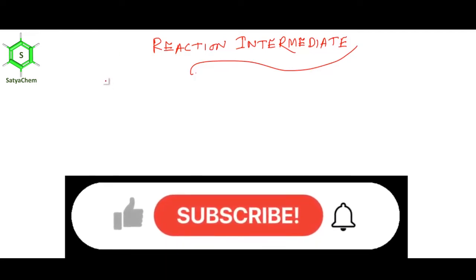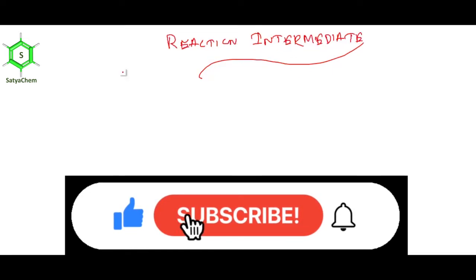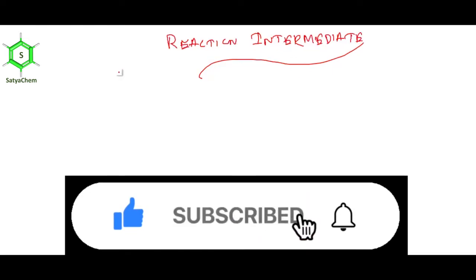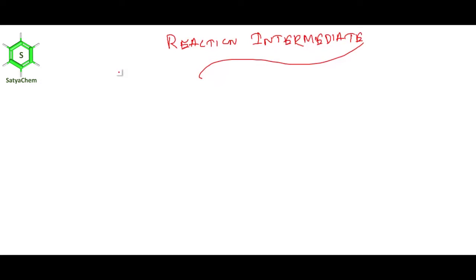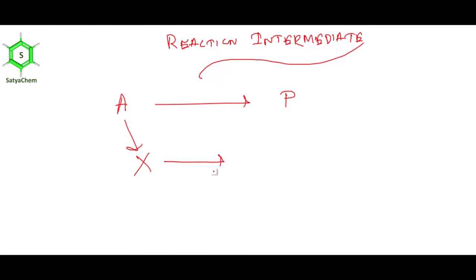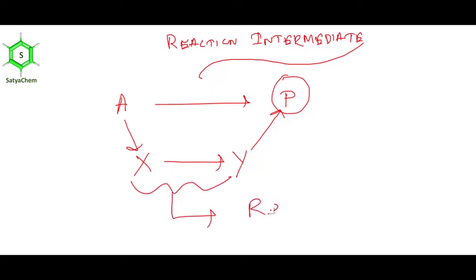Today I am going to discuss reaction intermediates in chemistry. A reaction intermediate is a molecular entity that is formed from the reactants and reacts further to give the final product. Suppose A is a reactant and P is the product. A first gives a very unstable compound X, then X gives another unstable compound Y, and ultimately we get the final product P. These two unstable molecular entities are called reaction intermediates.